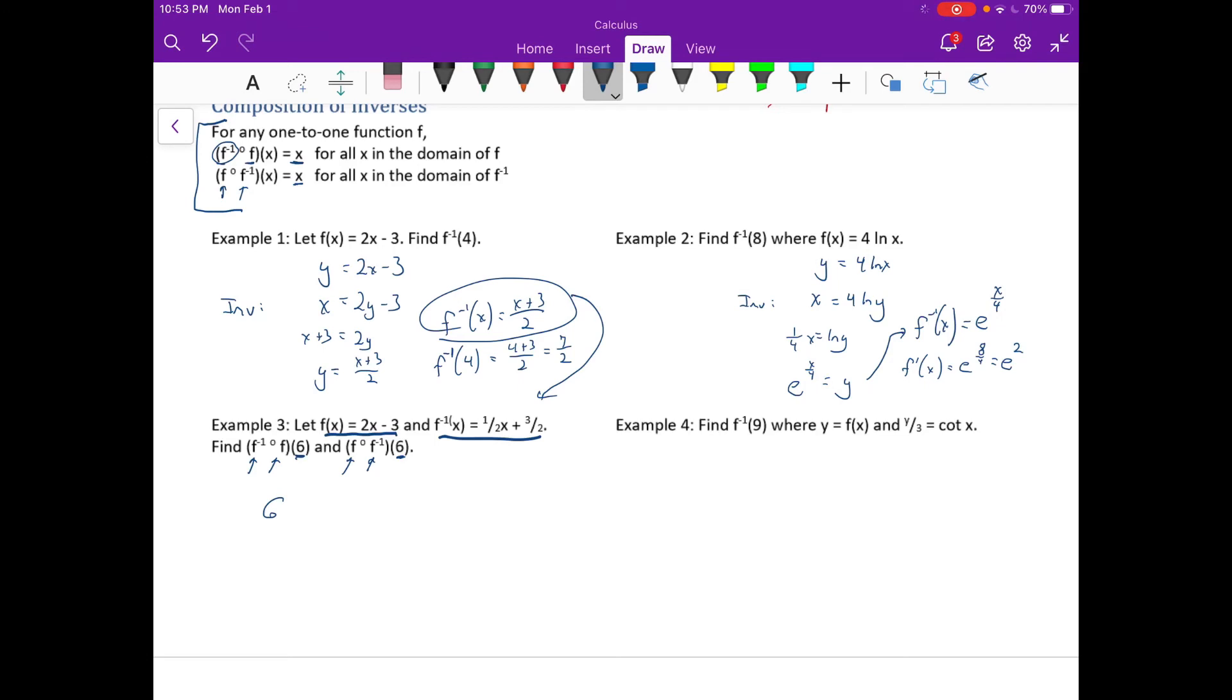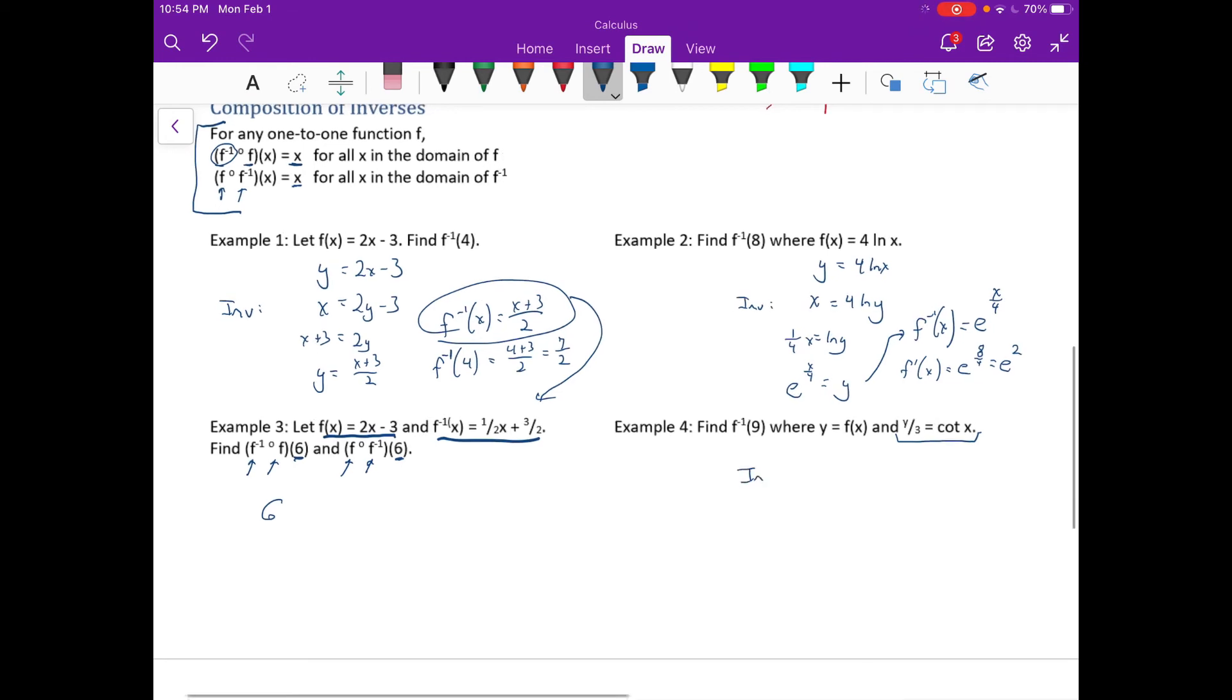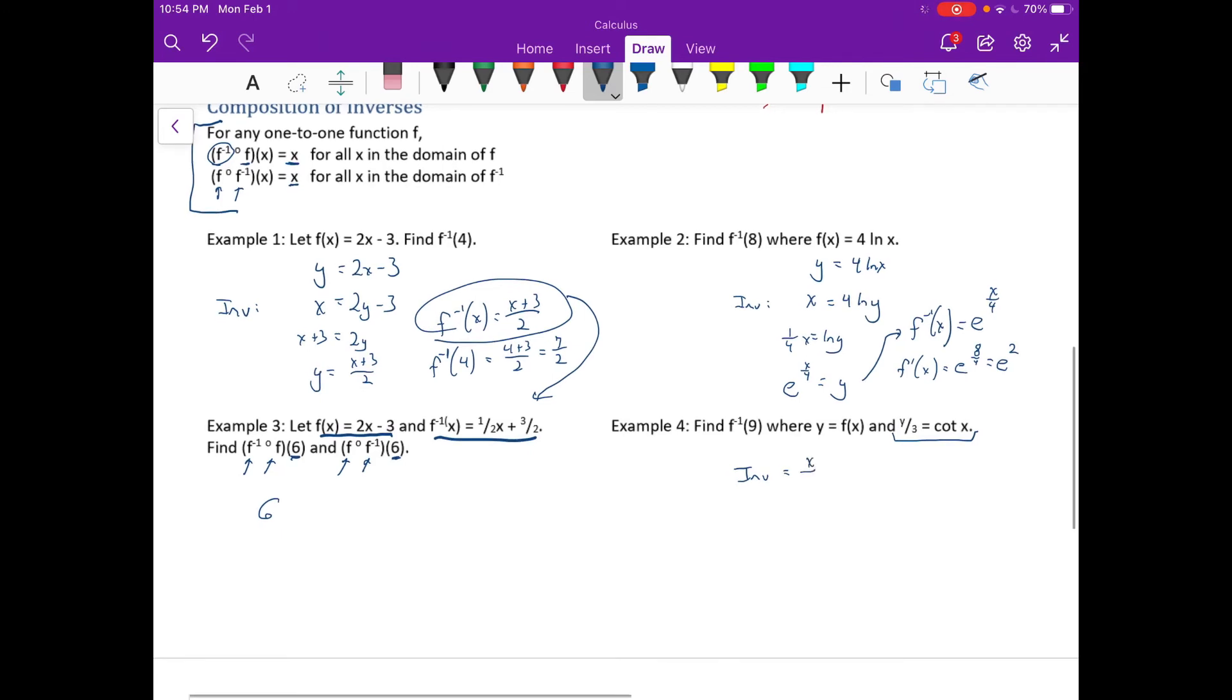The last one here says find f inverse of 9, where y equals f of x and y over 3 equals the cotangent of x. Well, we can switch x and y here. We could multiply both sides by 3, but let's go ahead and switch x and y. Let's see what happens here.